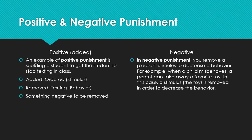An example of positive punishment: when you ask students to stop talking, stop making noise, stop laughing, stop using a cell phone — you are ordering something. An example of positive punishment is scolding a student to get them to stop texting in class. You added something — a stimulus — which causes the undesired behavior to be removed.